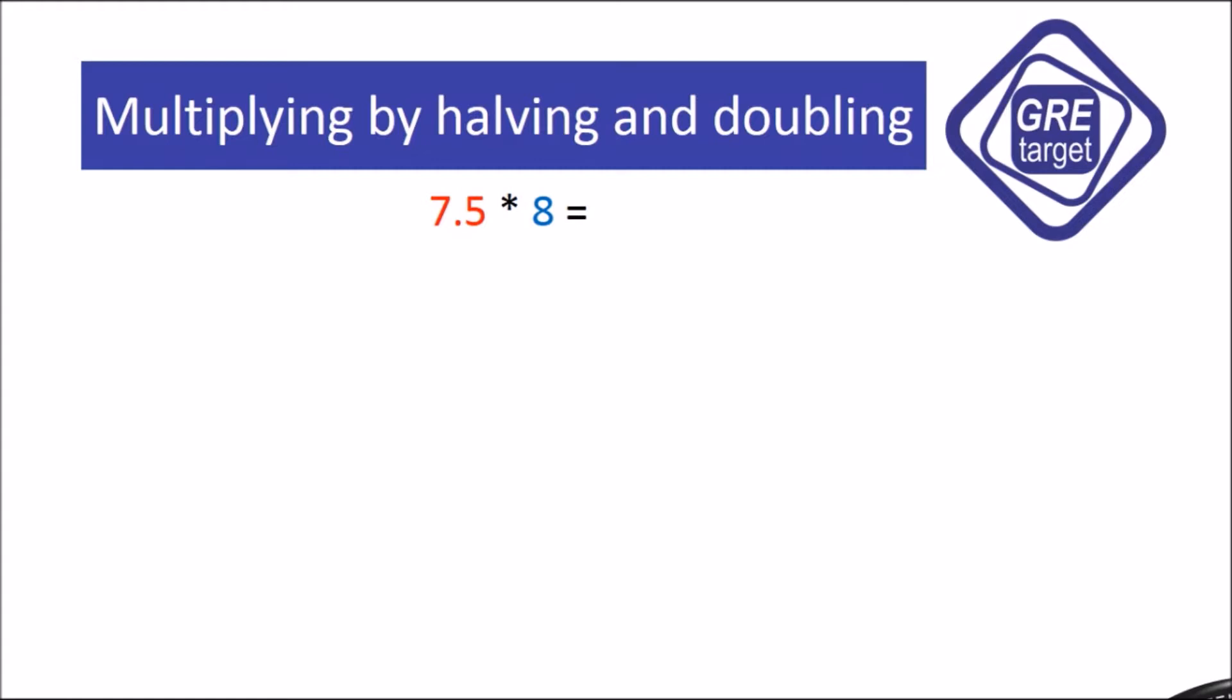Hello friends, welcome to GRE target. Today's topic is multiplying by halving and doubling. Suppose our question is 7.5 × 8. We need to double any one number - suppose we are doubling 7.5, so we get 15.